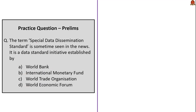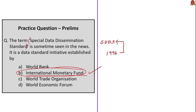The next question asks which organization established the Special Data Dissemination Standard (SDDS). The SDDS initiative was established by the International Monetary Fund in 1996 to bring data transparency in member countries. The correct answer is option B: International Monetary Fund.